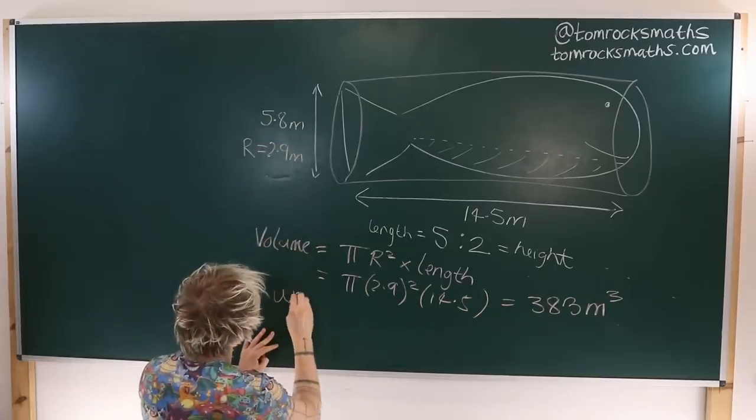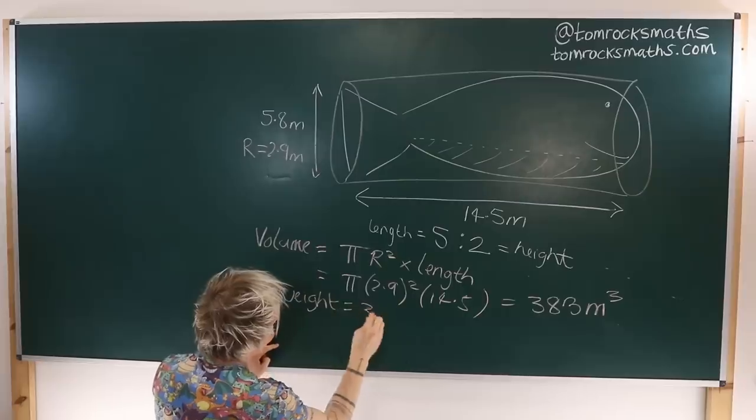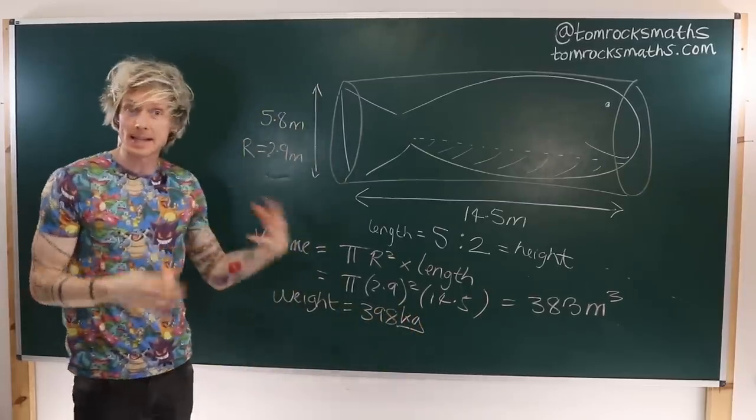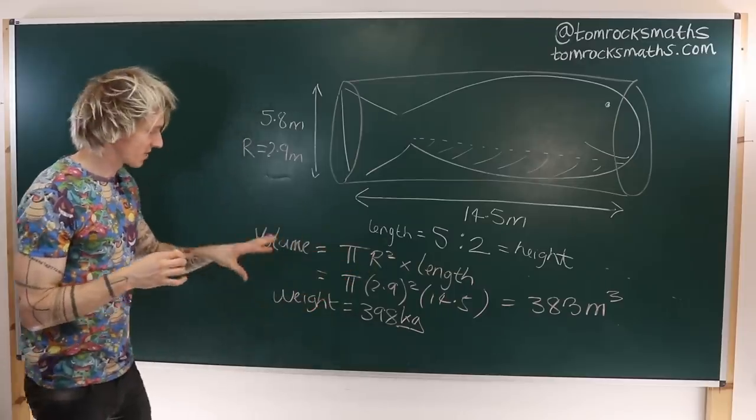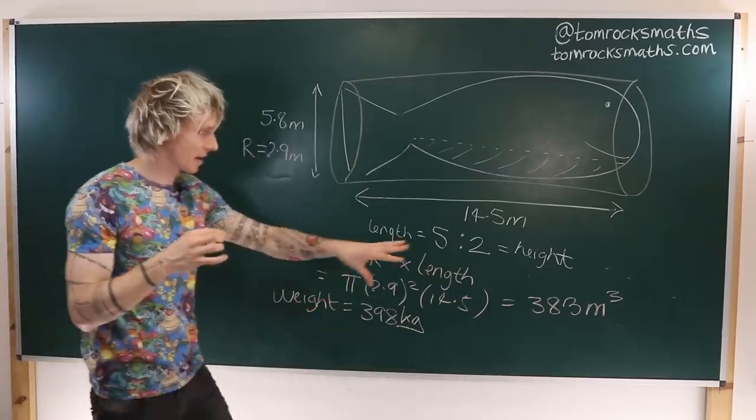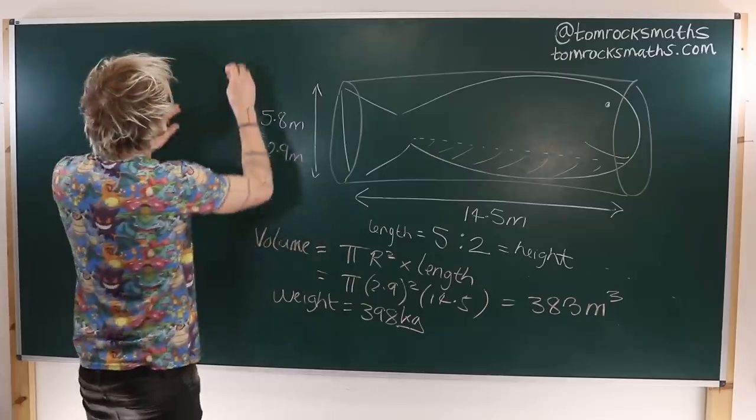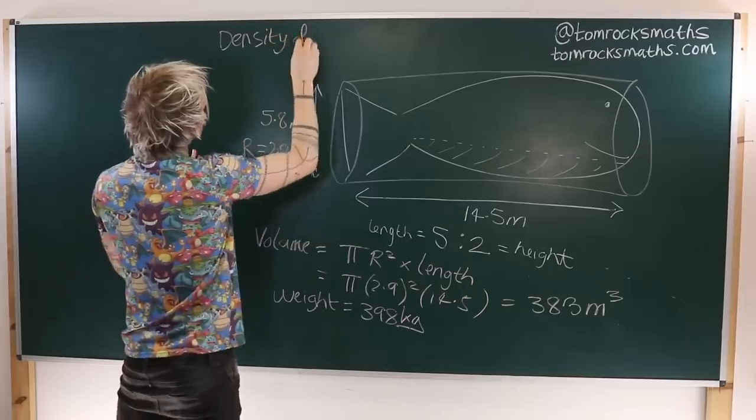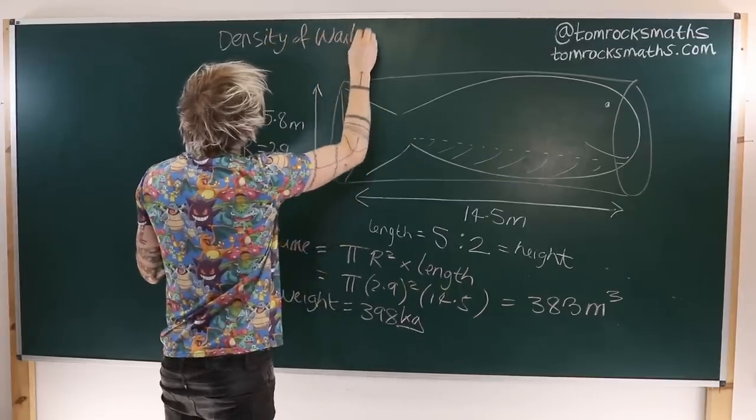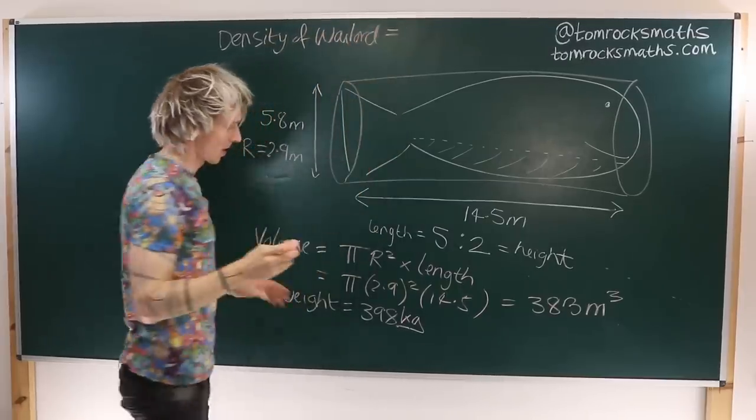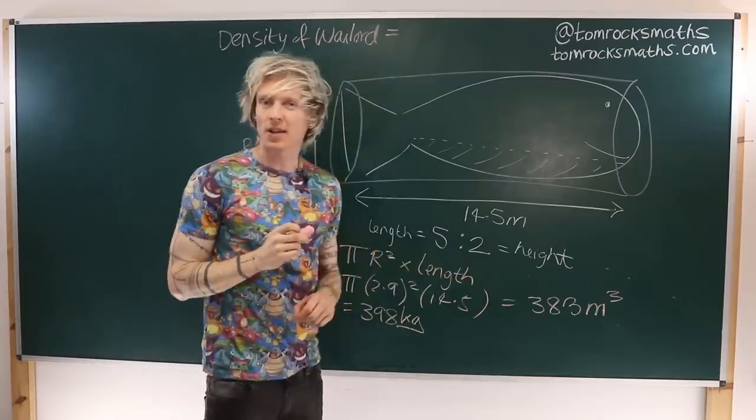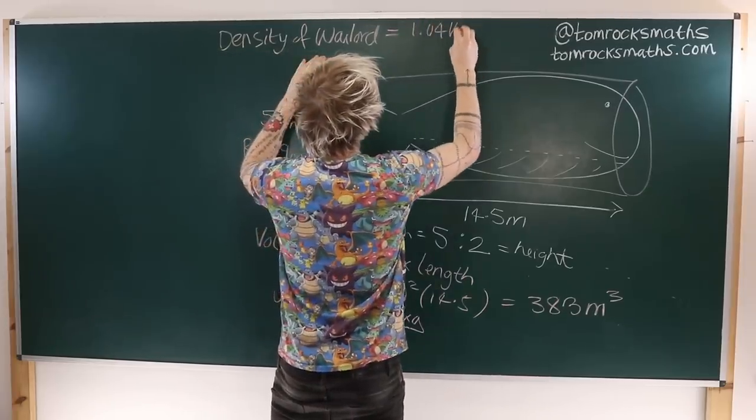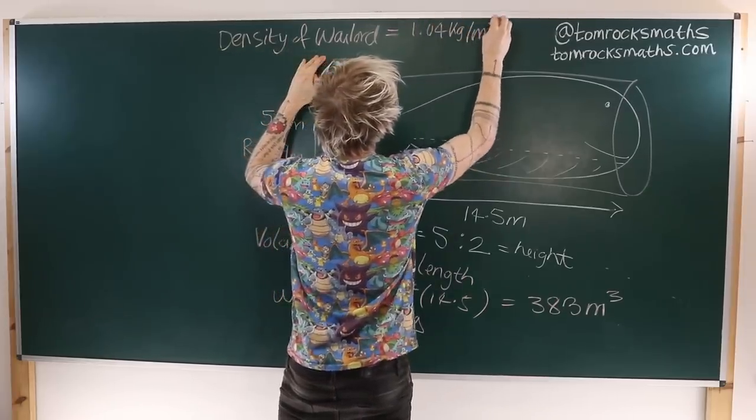So the weight is 398. So what this means is we can calculate the density of our Pokemon. We simply divide the weight by its volume. So the density of Wailord is equal to 398 divided by 383, which gives us 1.04 kilograms per meter cubed.